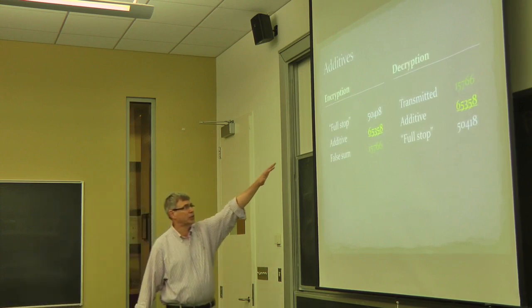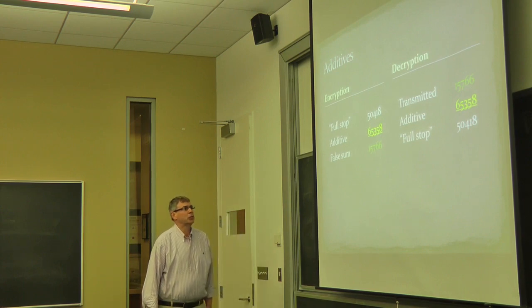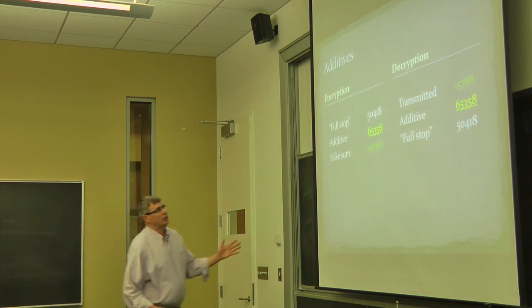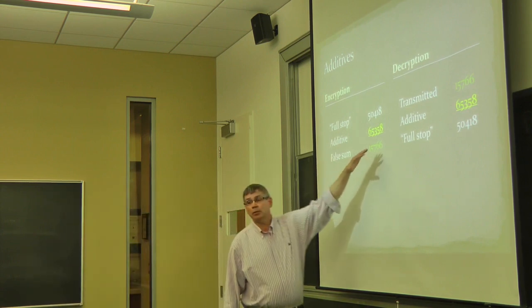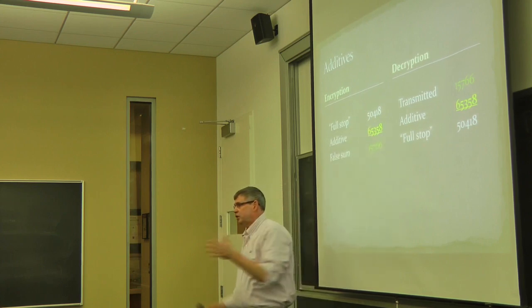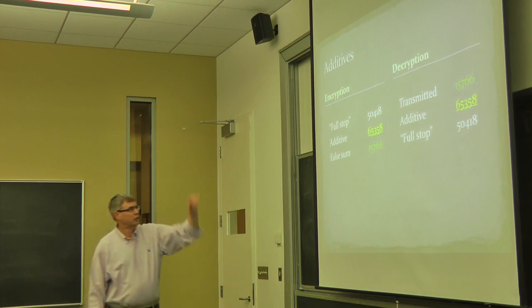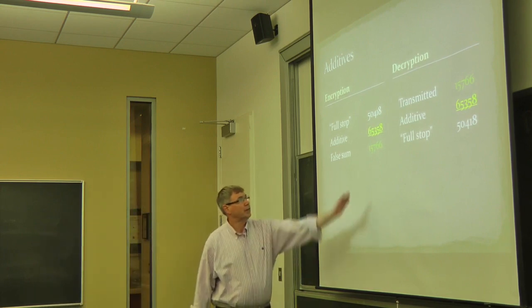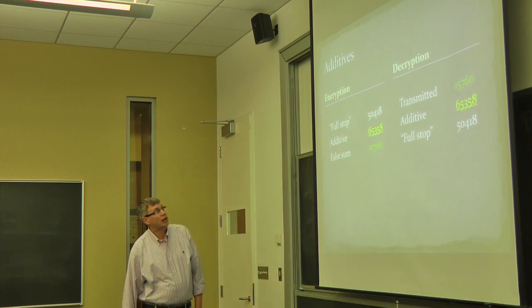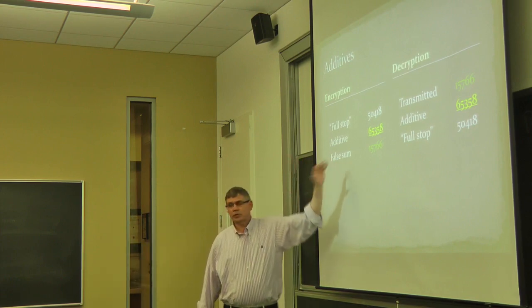So for example, if you take a code group that stands for full stop, this one 50418, what they did was they overlaid it with a random number. And the way the overlaying was done is they added, but they added without carrying. So 8 plus 8 was 6, not 16. You're just adding in columns mod 10. So you can go from left to right or right to left, but here you're going to get 8, 6, 7, 5, and 1 rather than 11. And then what was transmitted, of course, was this false sum.